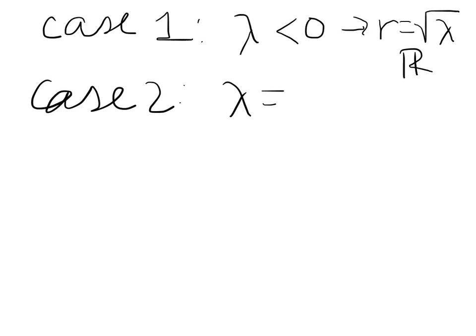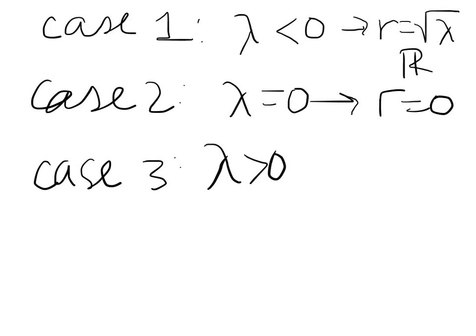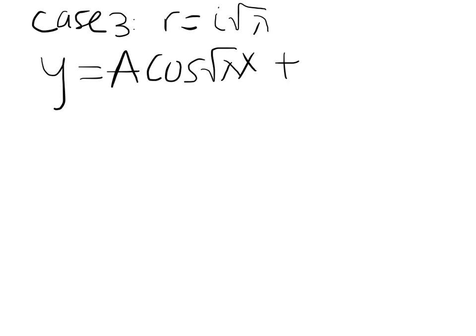We have case 1 where lambda is less than 0, so r = sqrt(λ) and is real. Case 2 where lambda equals 0, which means r = 0. And case 3 where lambda is greater than 0, so r is some complex valued number. I'm going to try case 3 first. That's r = i·sqrt(λ). This yields the general equation for y: y = a·cos(sqrt(λ)x) + b·sin(sqrt(λ)x).